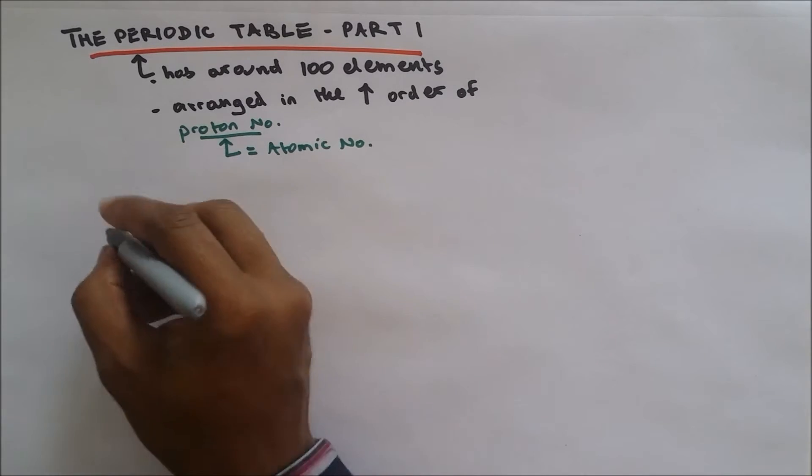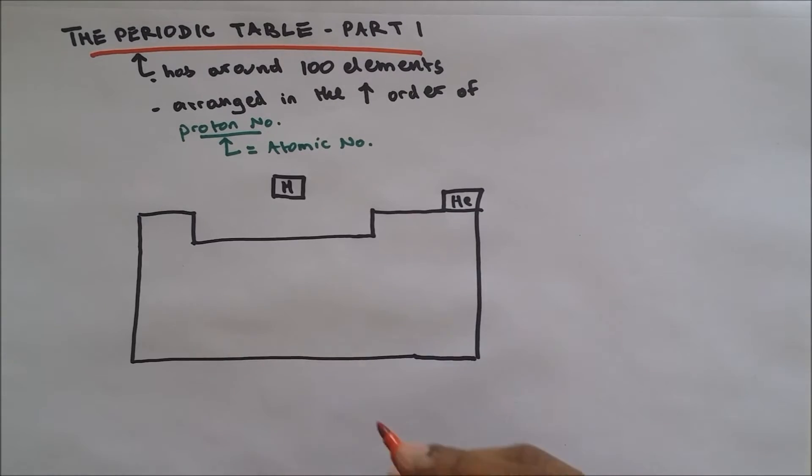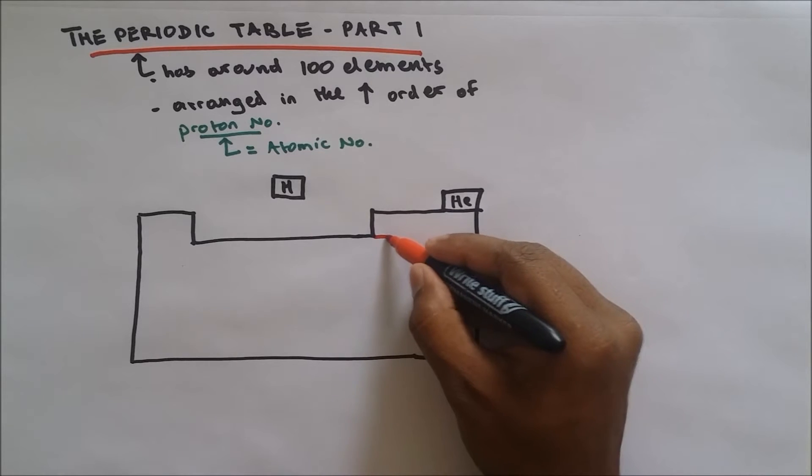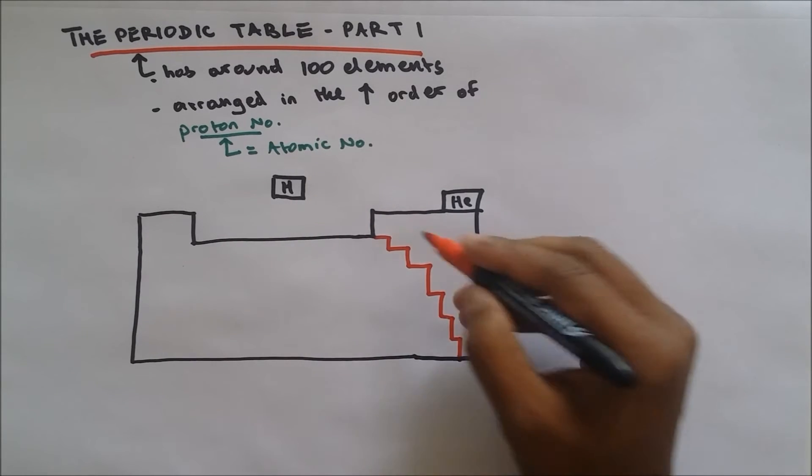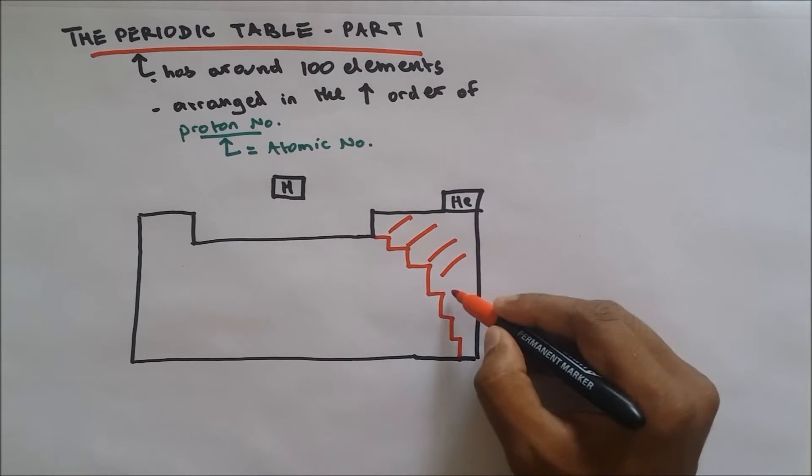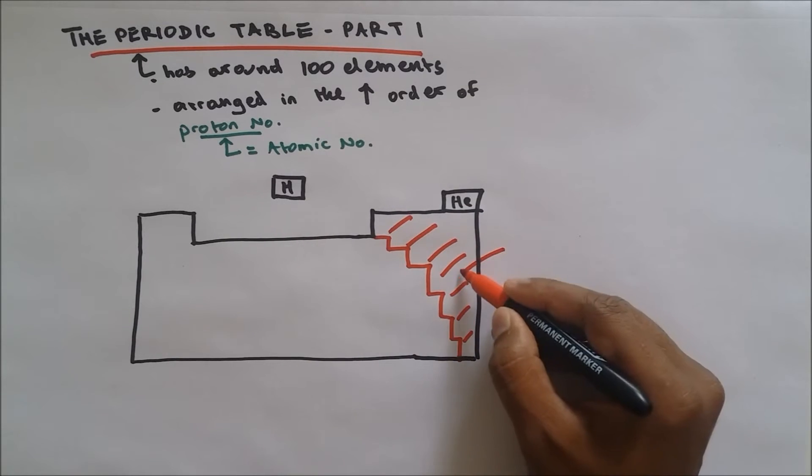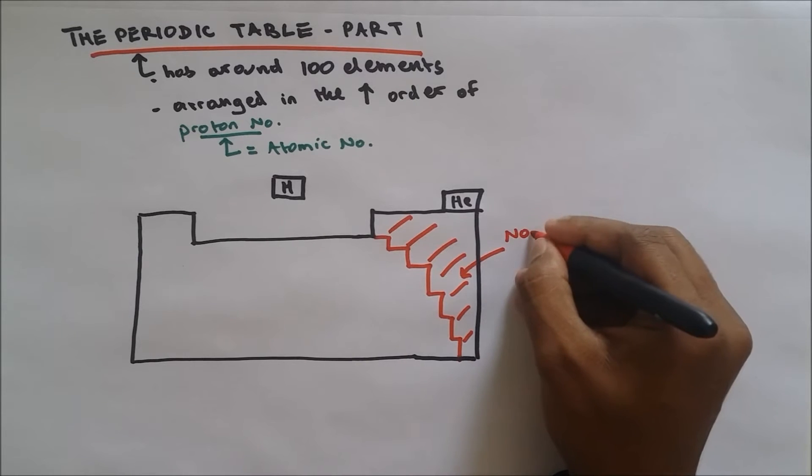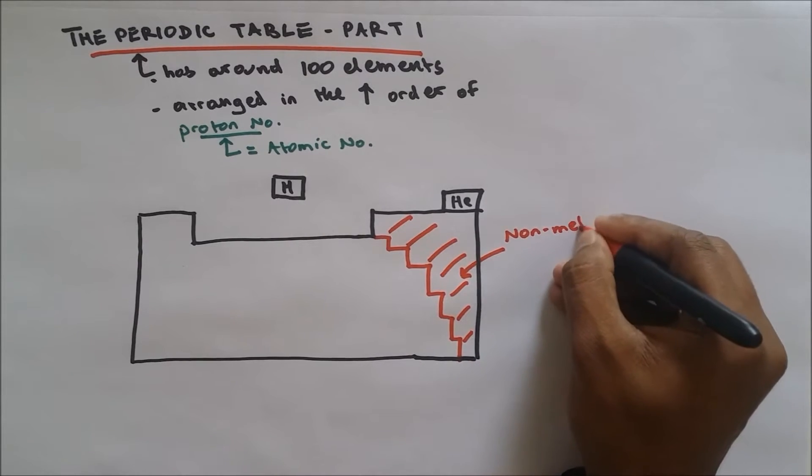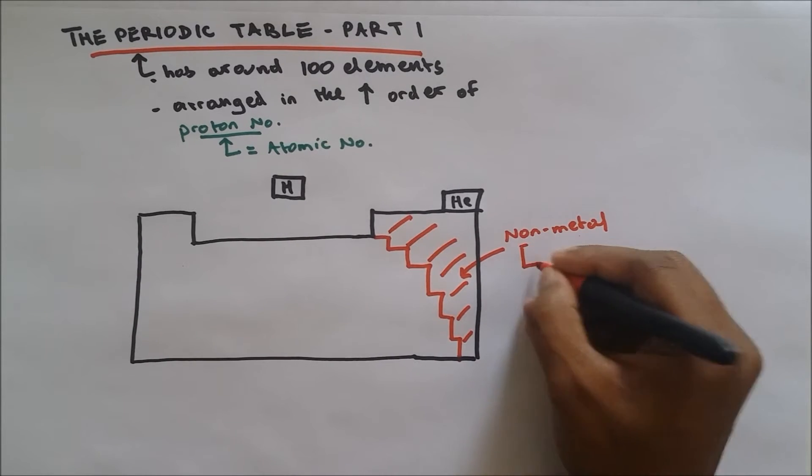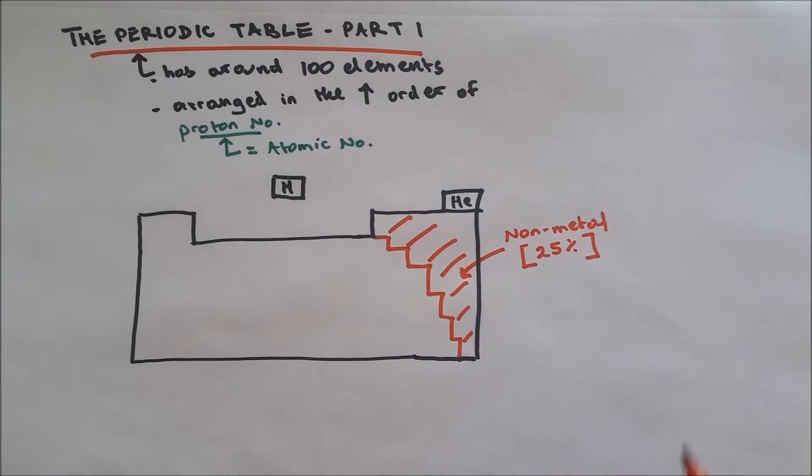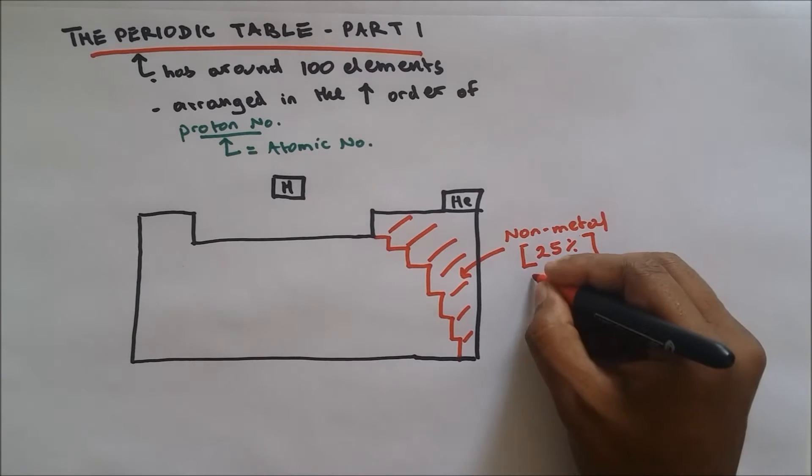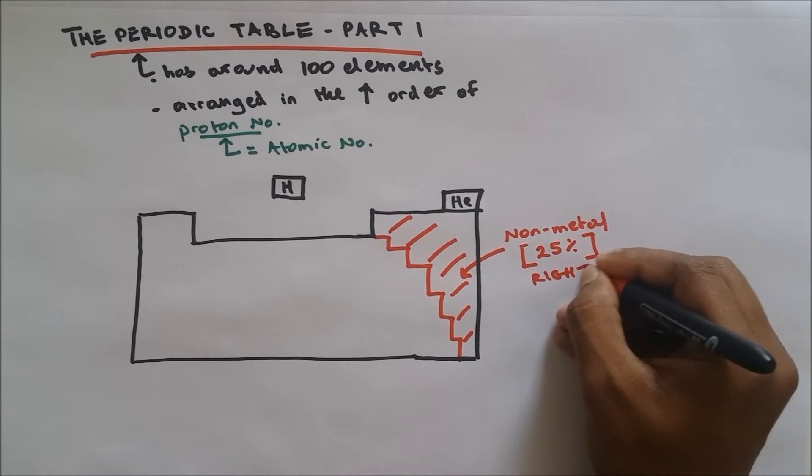So if I draw the periodic table, elements found on the right hand side are non-metals. So the shaded parts on the right, these are non-metals. And it is only 25% of the elements of the periodic table and they are found on the right hand side.